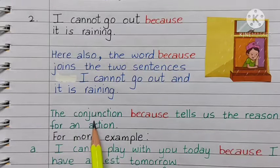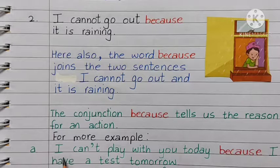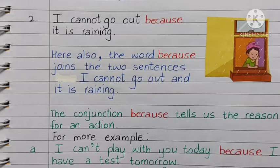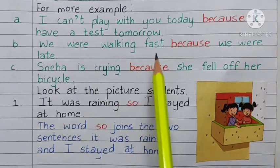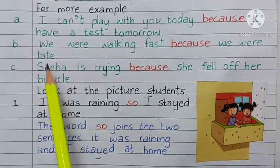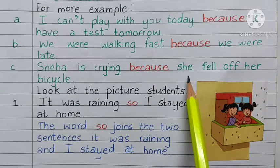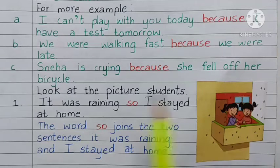Here also, the word 'because' joins the two sentences: I cannot go out, and it is raining. The conjunction 'because' tells us the reason for an action. For example: I can't play with you today because I have a test tomorrow. We were walking fast because we were late. Sneha is crying because she fell off her bicycle.